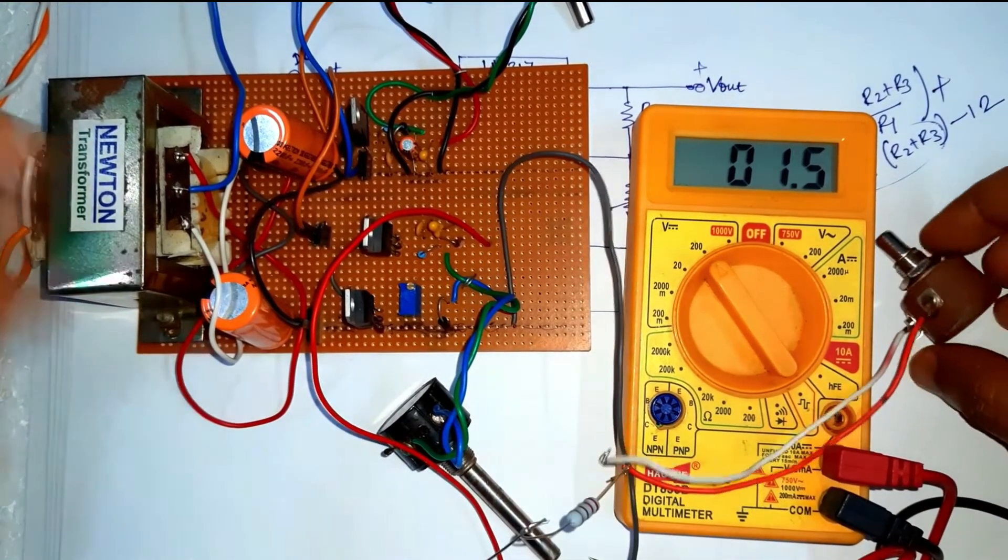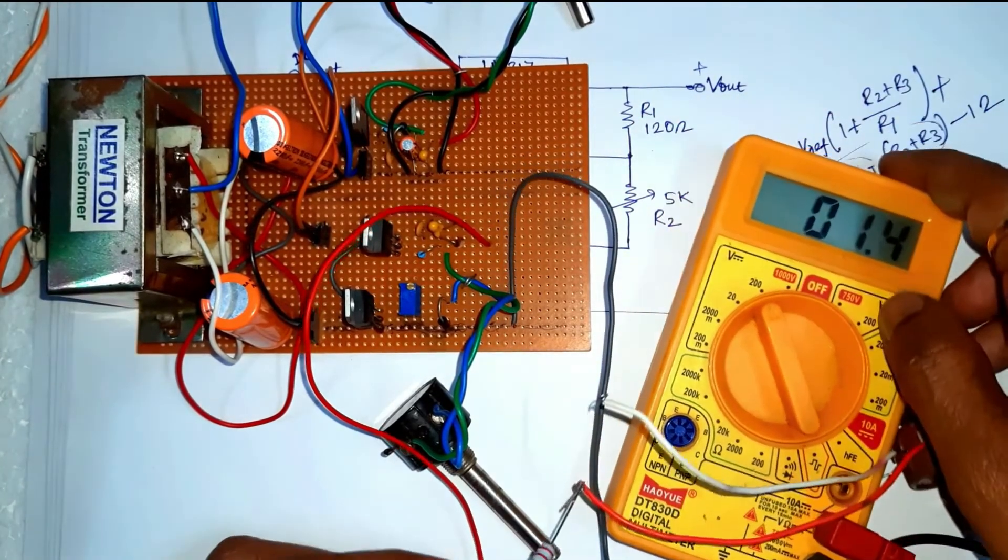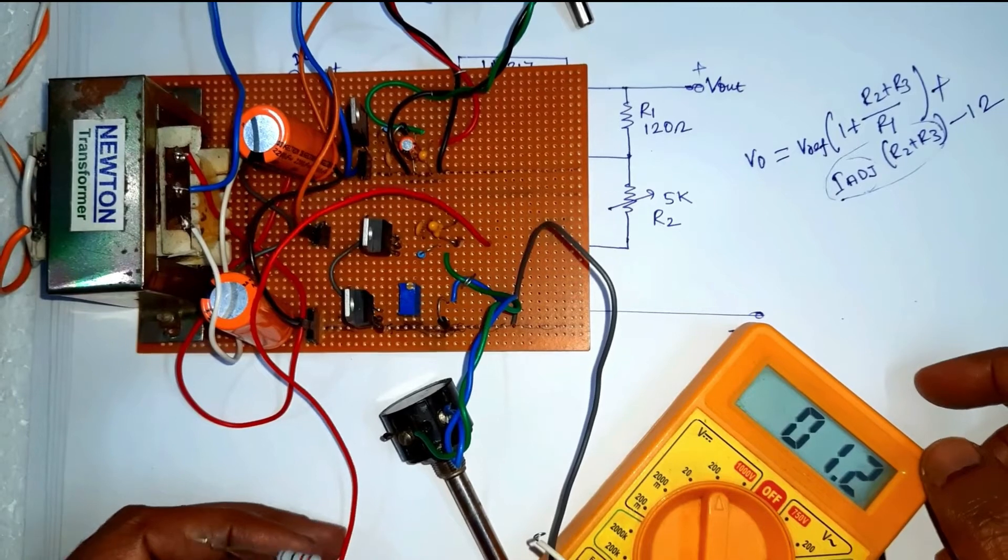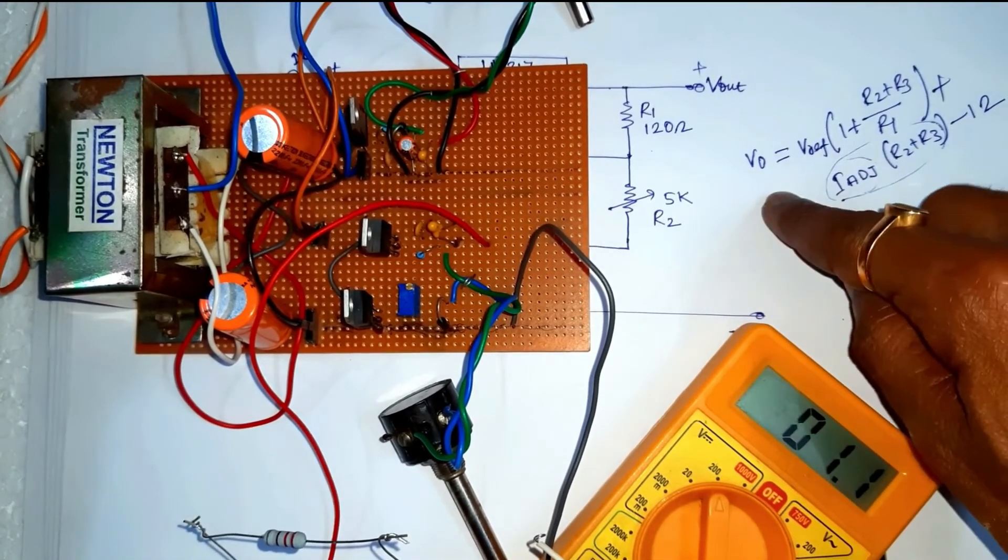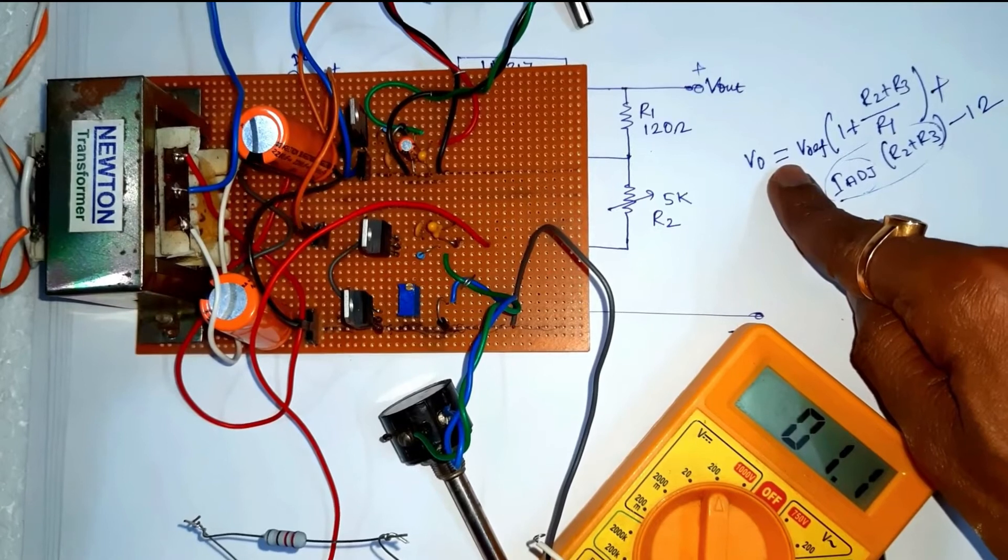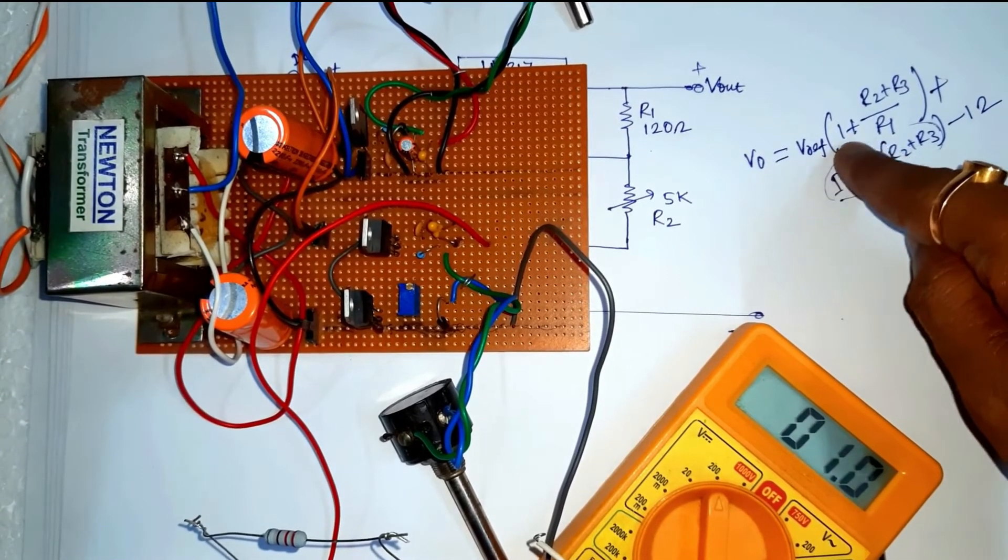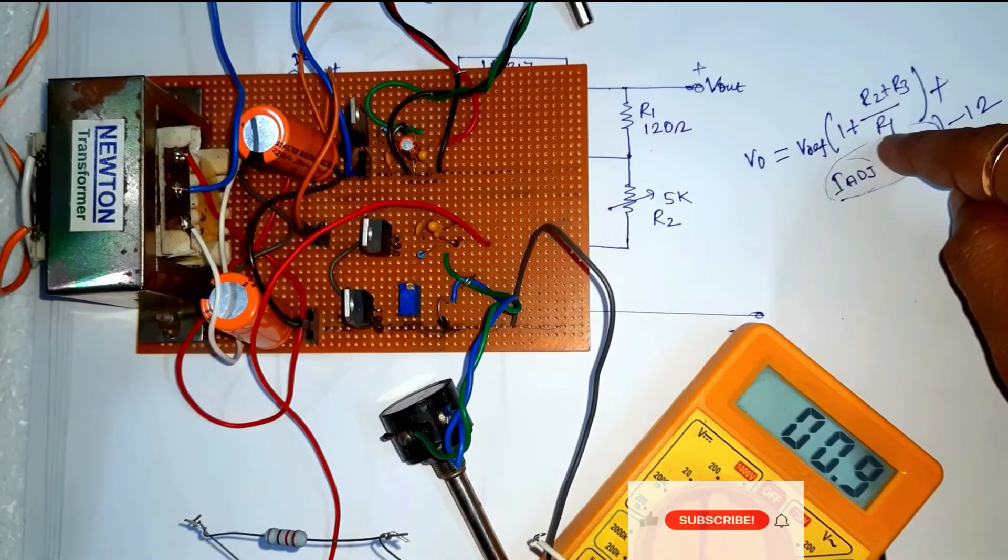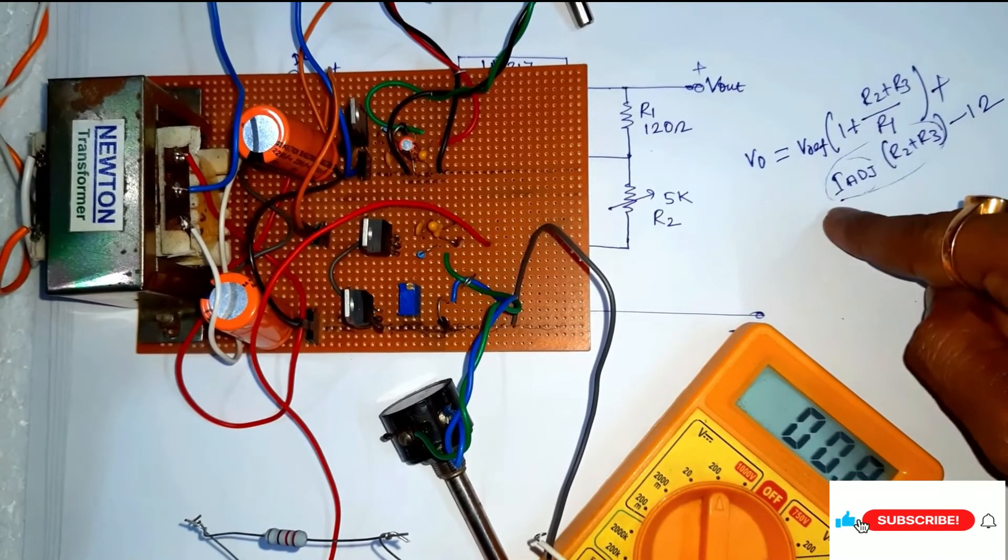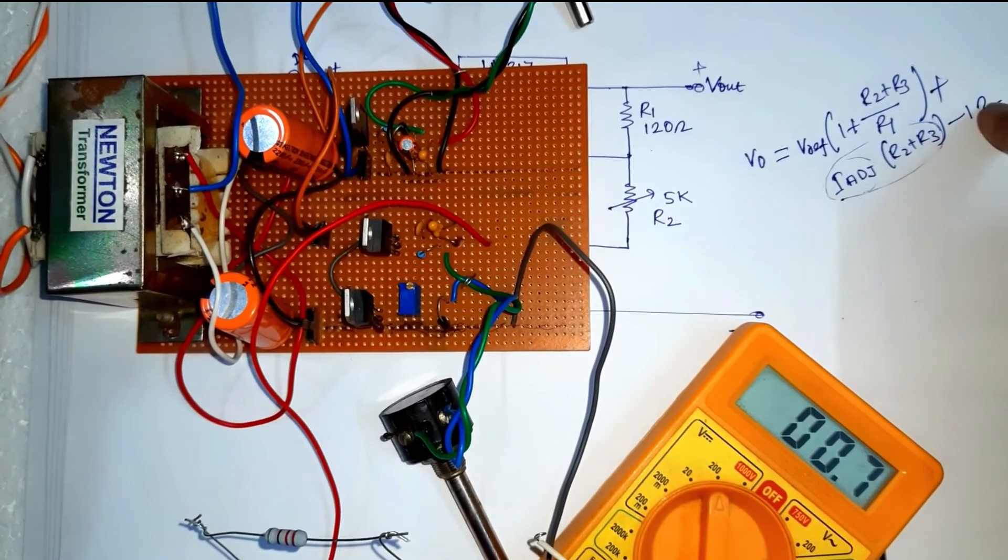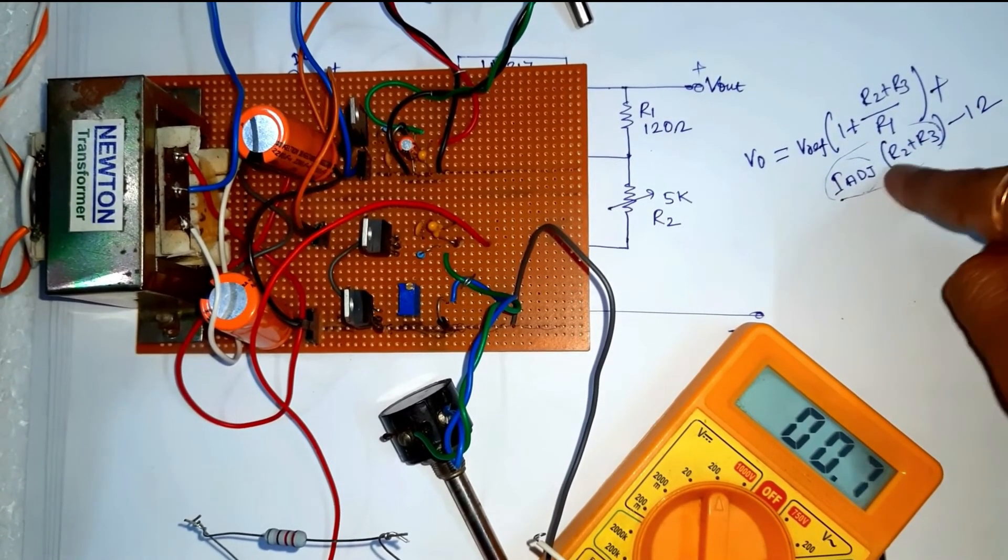Now just check practically and theoretically. Output voltage will be V-reference into 1 plus R2 plus R3 by R1 plus IADJ into R2 plus R3 minus 12 volt. So it will be near about 0.